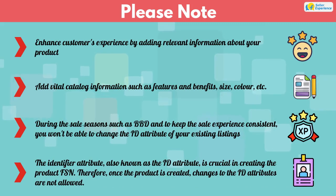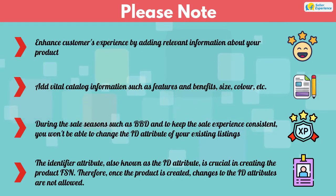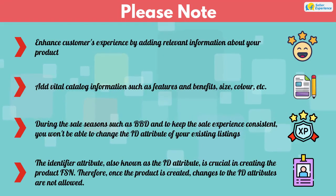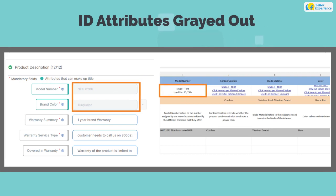The identifier attribute, also known as ID attribute, is crucial in the creation of the product FSM. Therefore, once the product is created, changes to the ID attributes are not allowed. If you notice ID attributes that are grayed out, then changes will only be accepted in the following scenarios.